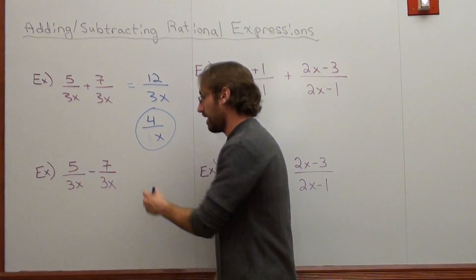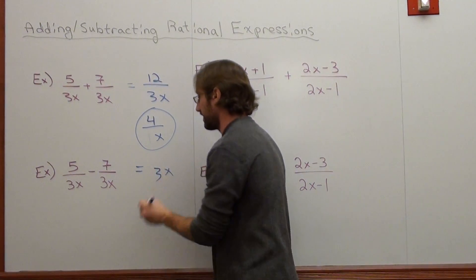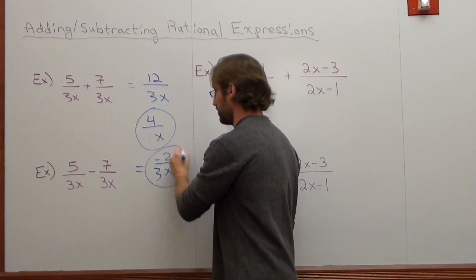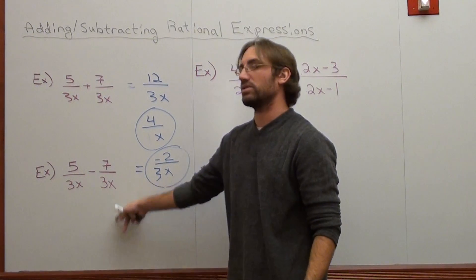Next one. The denominator is 3x because I'm adding or subtracting like denominators. 5 subtracts 7, negative 2. I cannot reduce negative 2 and 3. So that is the answer to the second line.